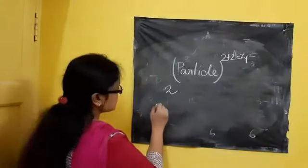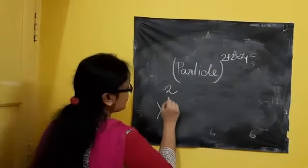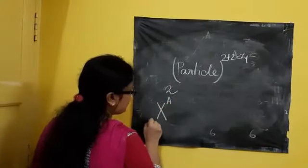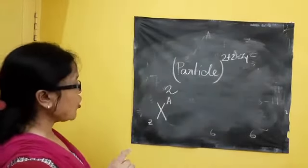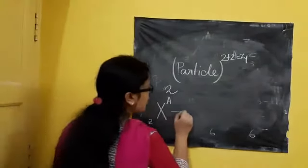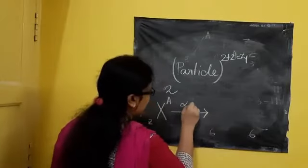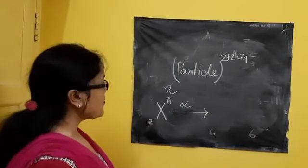Means whenever this is the parent nuclei—who is parent nuclei? From whom the radiation occurs. So this is parent nuclei, from parent nuclei alpha particle emits.